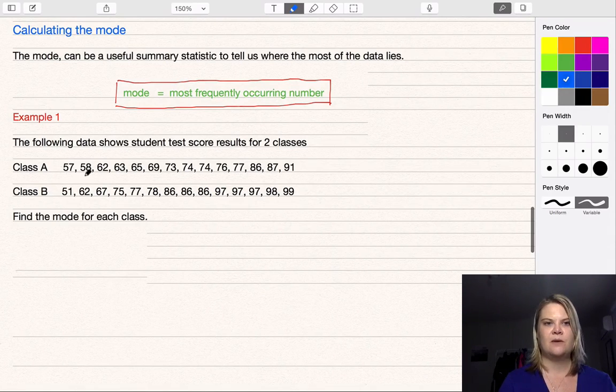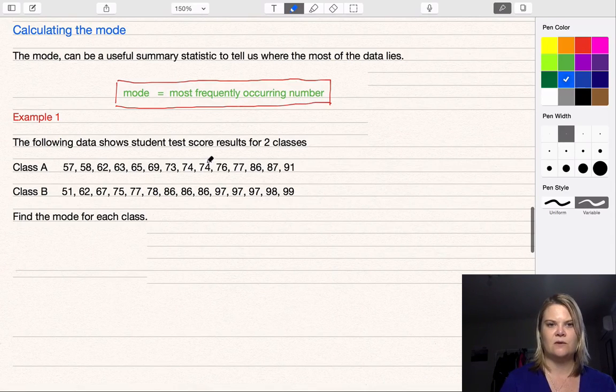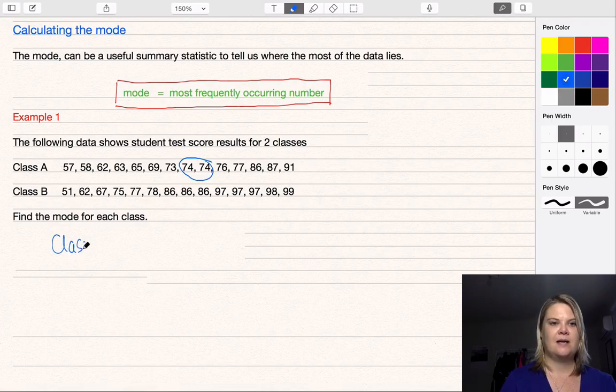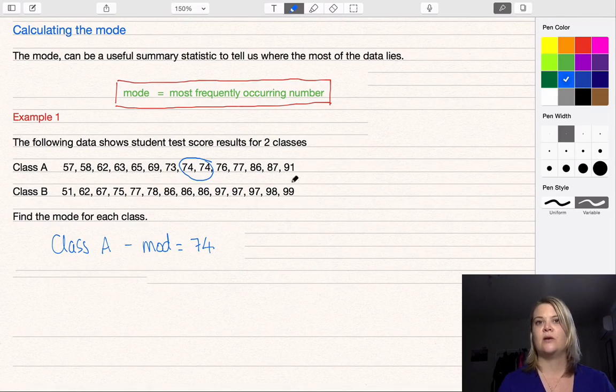In Class A we've got 57, 58, here we have 74 and 74 so there's two of those, and only one of everything else. So for Class A, mode equals 74. It's the most frequently occurring test result.